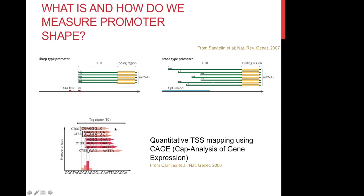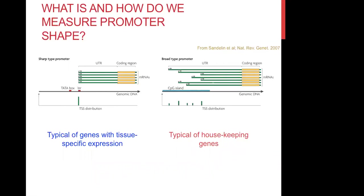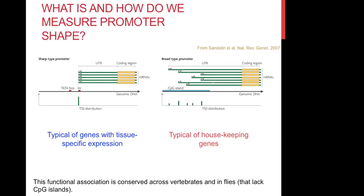Using this technique, you can construct maps of TSS usage and quantitatively measure how much a given position is used as a transcription start site. When this was done for the whole mouse and human genomes, there was a striking association already known for specific cases but remarkable to see genome-wide: sharp or narrow promoters are normally found in genes with tissue-specific, time-specific, or condition-specific expression — genes that are tightly regulated — while broad promoters are typical of housekeeping or ubiquitously expressed genes.